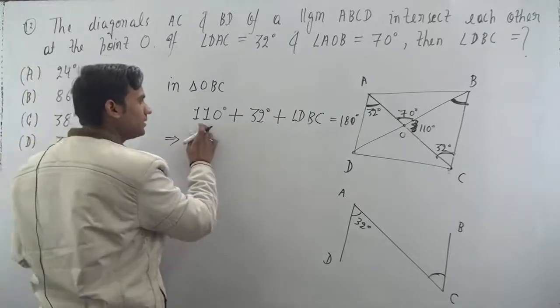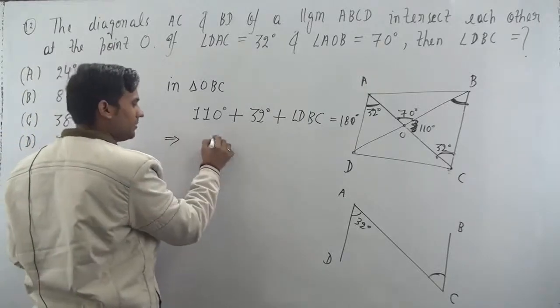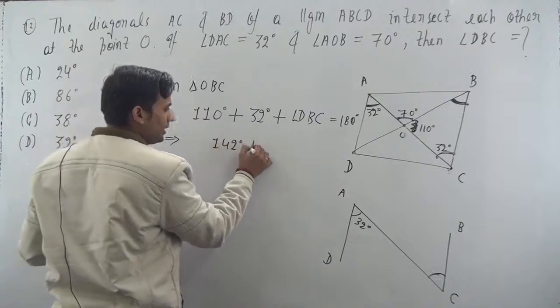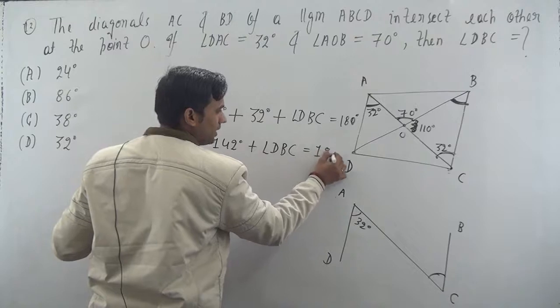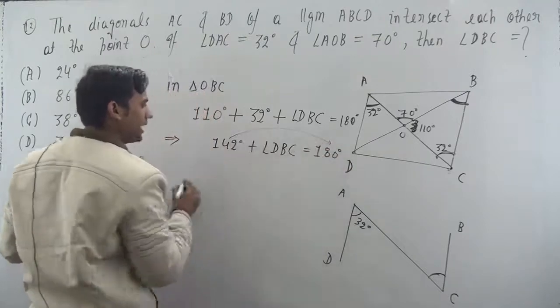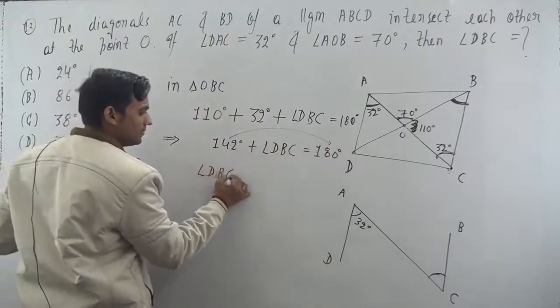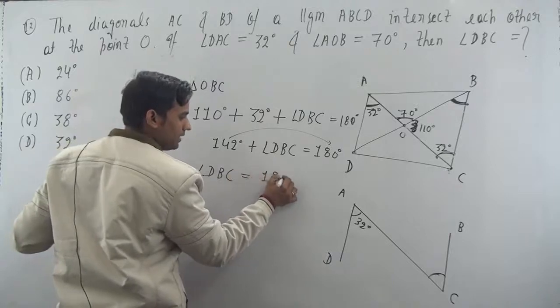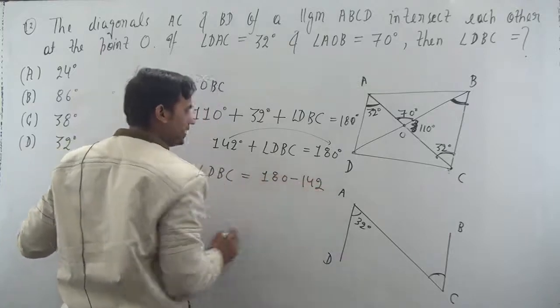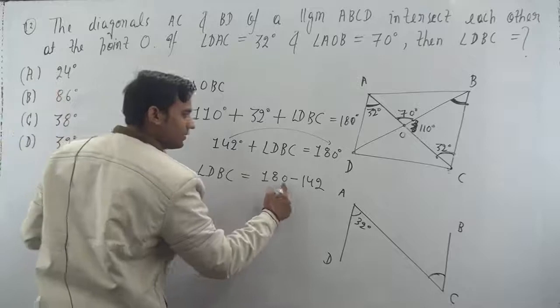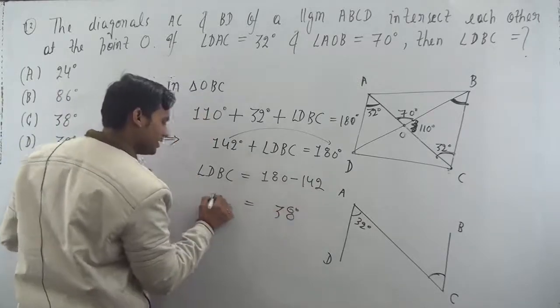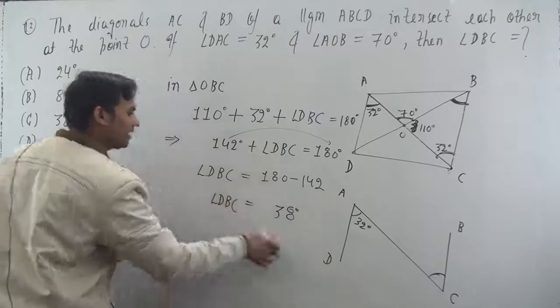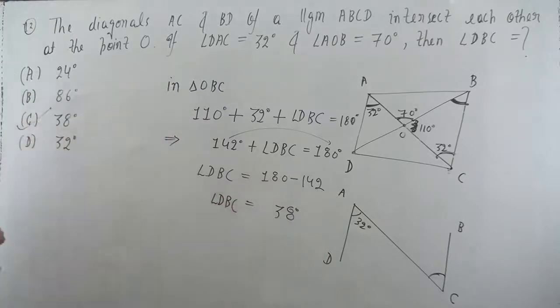Now 32 plus 110 will become 142 degrees and plus angle DBC is equals to 180 degrees. So 142 right mein jayega. So angle DBC is equals to 180 minus 142. So it will come 10 minus 2 is 8 and 7 minus 4 is 3, 38 degrees correct? So angle DBC kitna hoga? 38 degrees. So option C is the correct option.